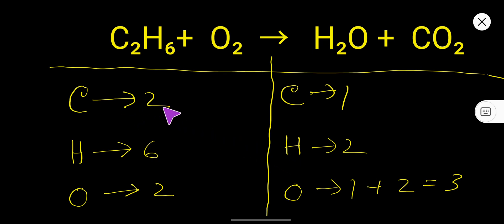So let us target carbon first. Here 2, here 1. So to balance carbon you can simply multiply here by 2 that gives you 2.